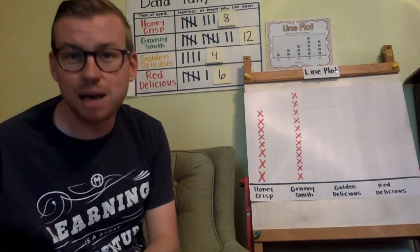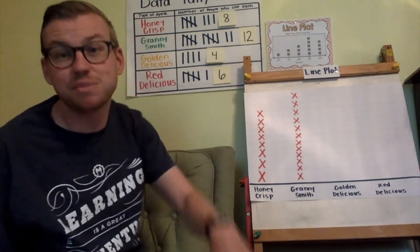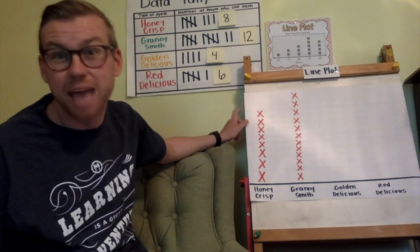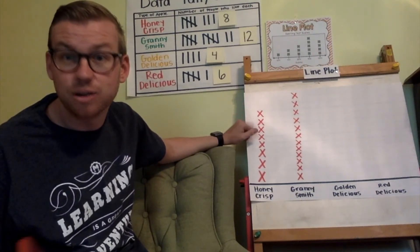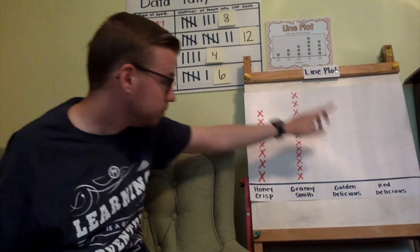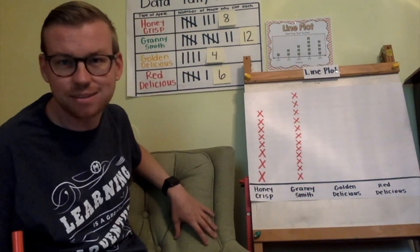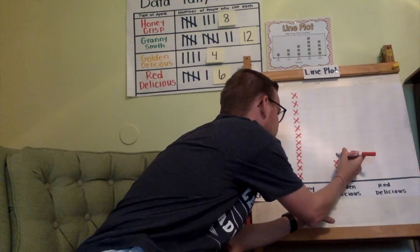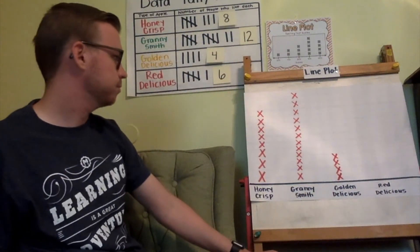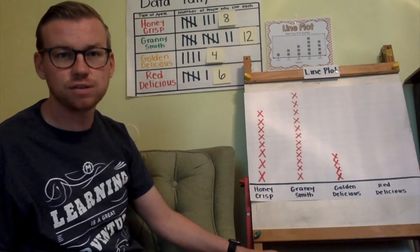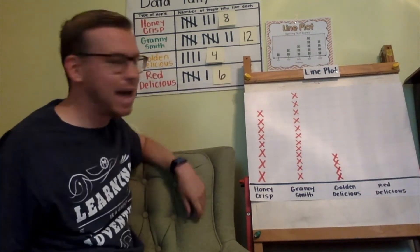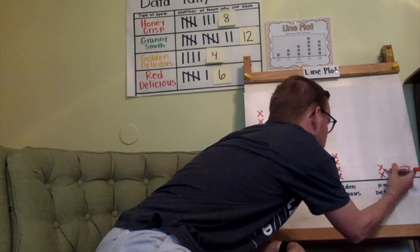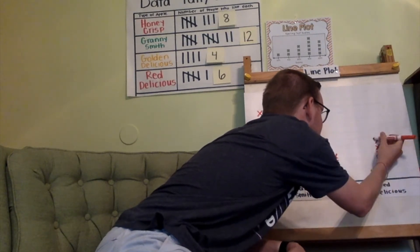The secret with the line plot is I want to make sure my X's are about the same size, because if I made them smaller the data would not be accurate on the graph. Golden Delicious is going to get four X's — one, two, three, four. And Red Delicious is getting six — one, two, three, four, five, six.